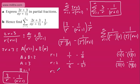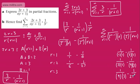Taking R equals 3: we get 1 over 3 squared, which is 9, multiplied by 3, minus 1 over 3 to the third power, which is 27, multiplied by 3 plus 1, which is 4. So this gives us 1 over 27 minus 1 over 108.